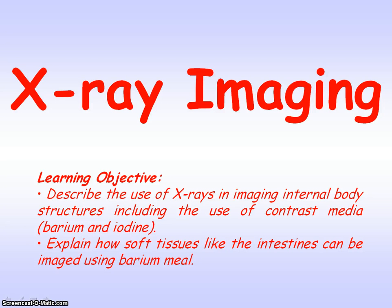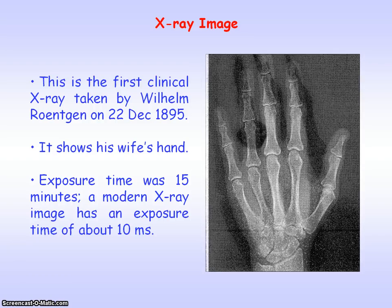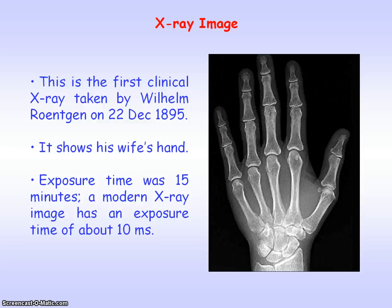We're going to be looking at x-ray imaging, which also includes the use of contrast media. This is the first clinical x-ray taken, showing a hand and the ring on a finger. The quality of the image wasn't very good and it needed an exposure time of 15 minutes, as opposed to modern x-ray images which only need an exposure time of about 10 milliseconds. And you can see the quality is much improved.